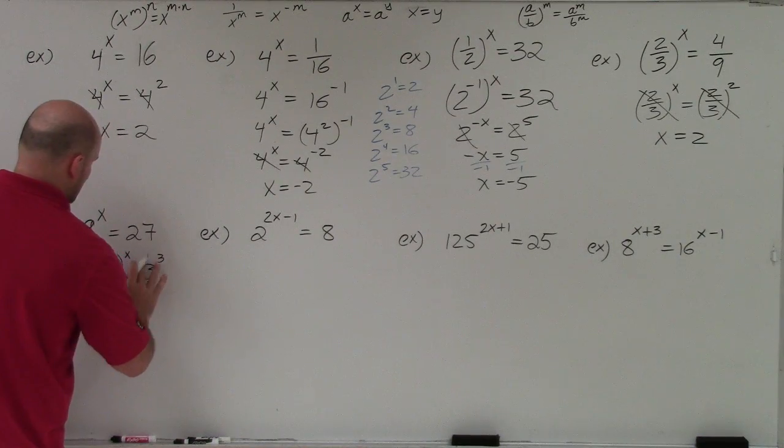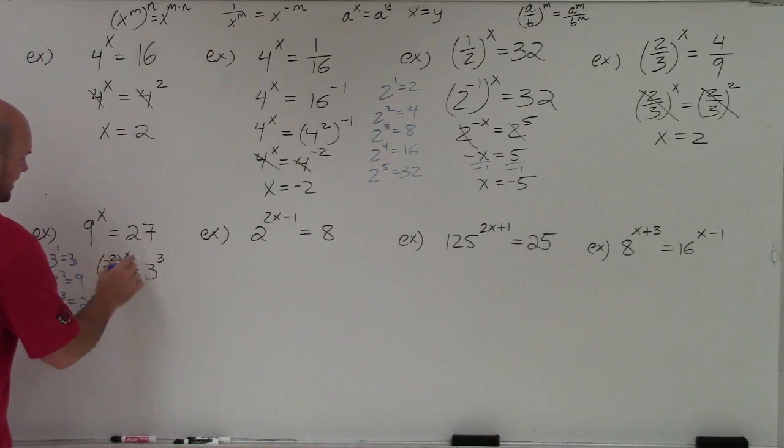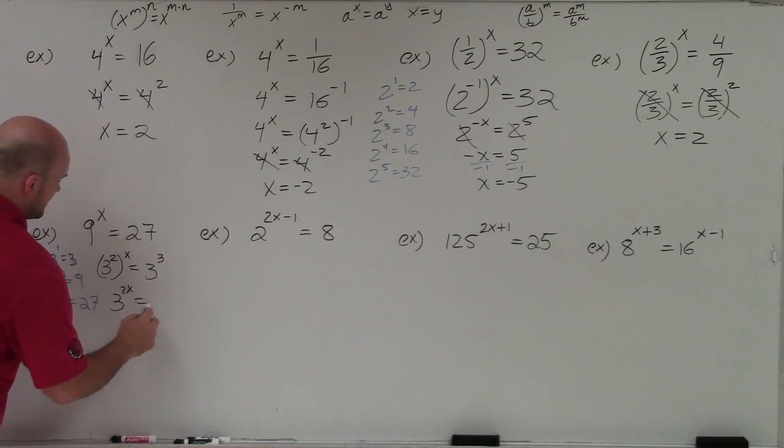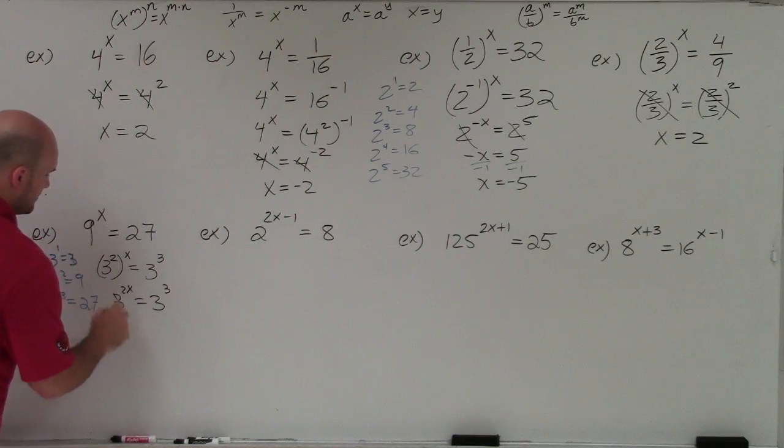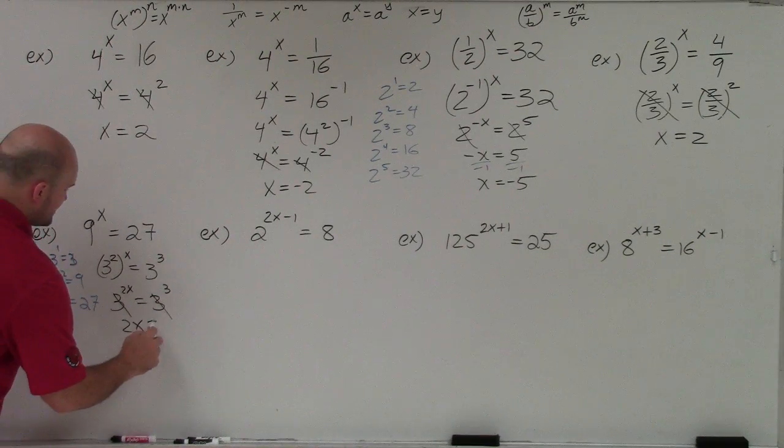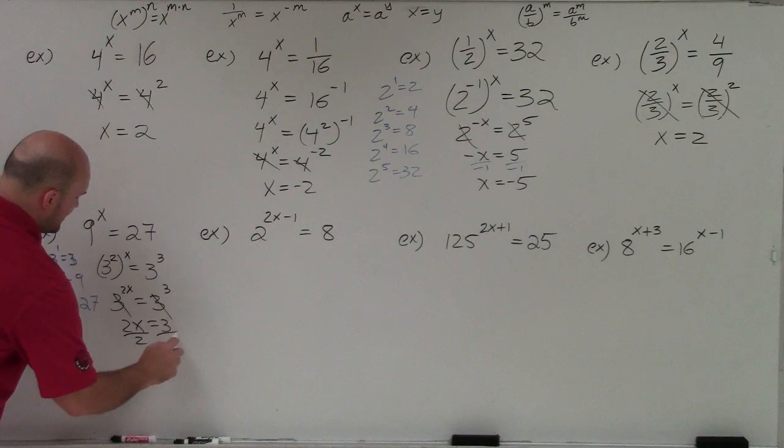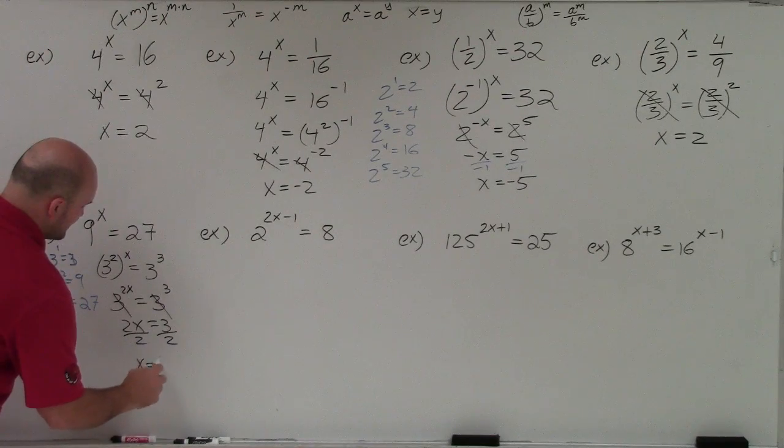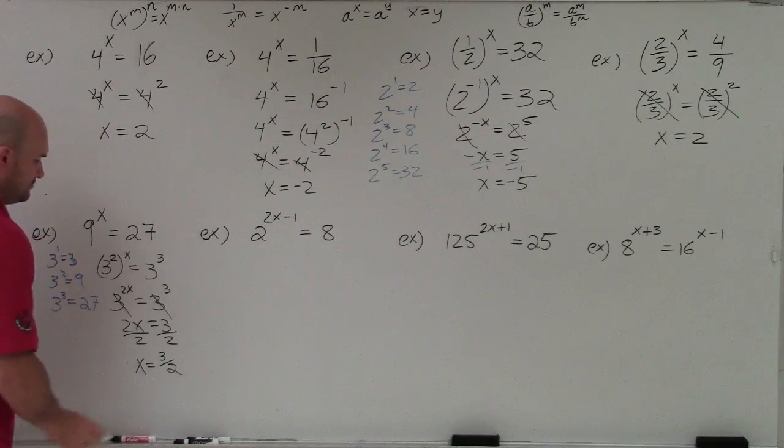Now I apply my power rule. So I get 3 to the 2x equals 3 cubed. Therefore, I have 2x is equal to 3. Divide by 2, x equals 3 halves.